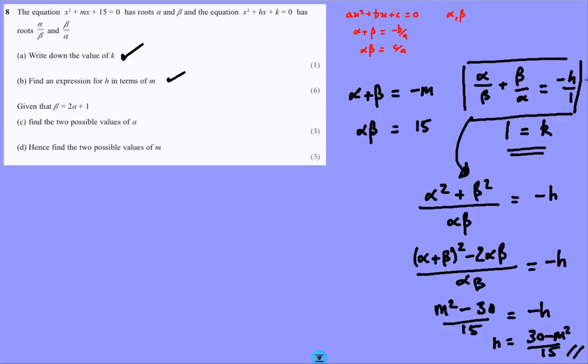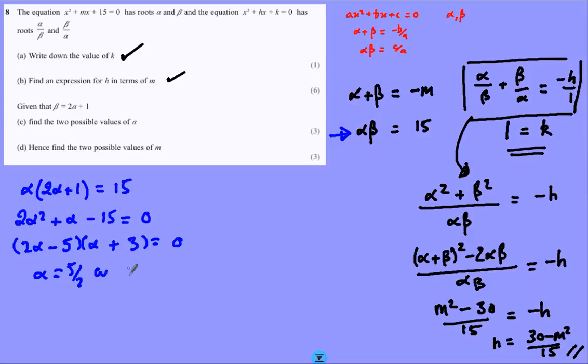Part c gives me an expression connecting alpha and beta, and I think I'll go back to this one for that, which tells me that alpha multiplied by beta equals 15. So I'm going to multiply out, make it into a quadratic, factorise, and we've got 3 and 5, plus 6 minus 5. So we've got alpha is 5 over 2, or alpha equals minus 3, two possible values.